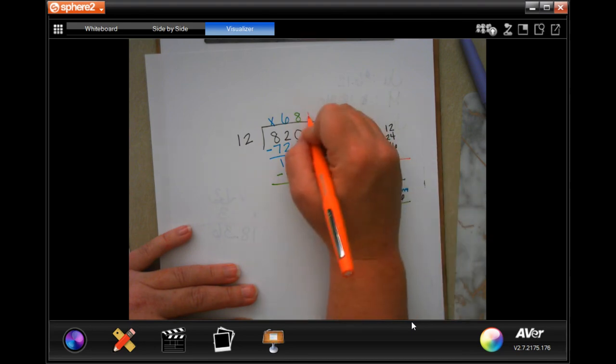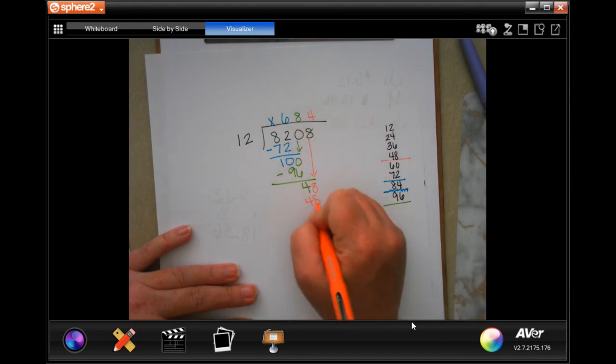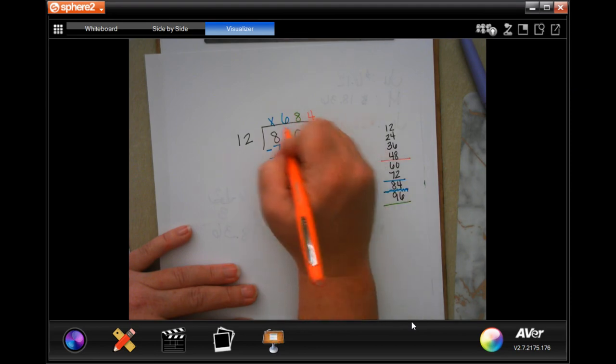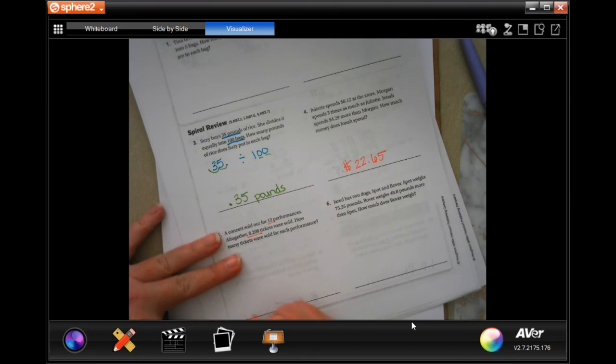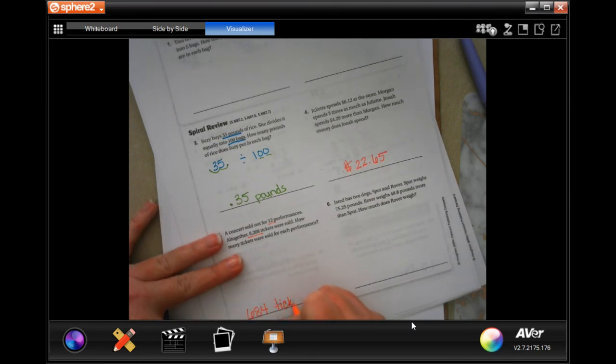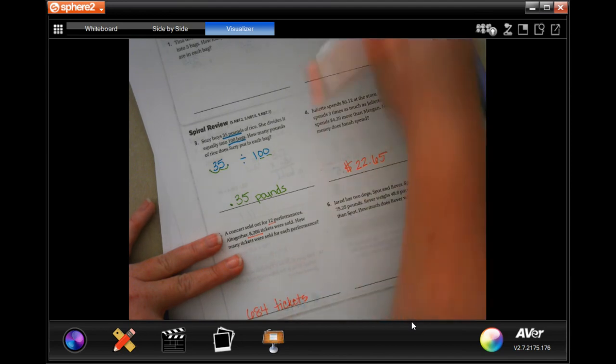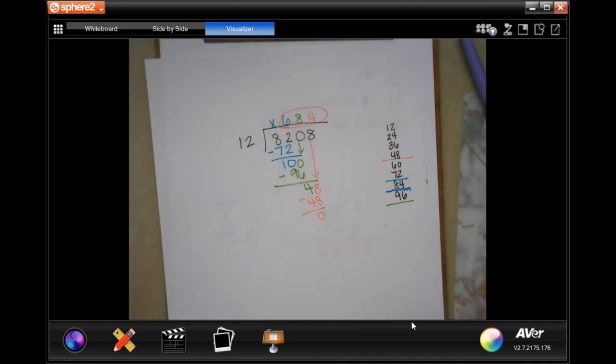12 goes into 48 four times. That is 48. We subtract. We get 0. So 684 tickets. Make sure that you're labeling. And make sure that you're writing down your work.